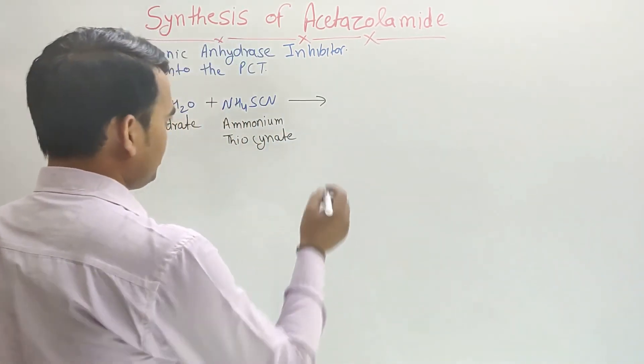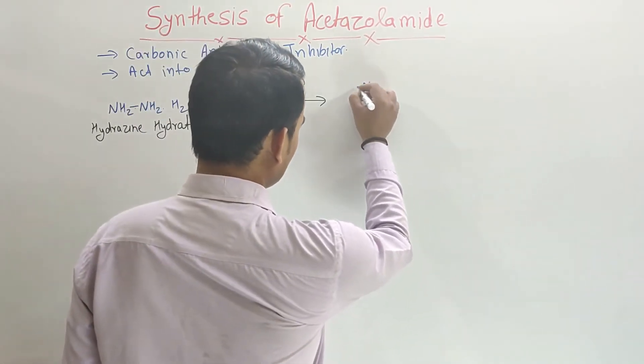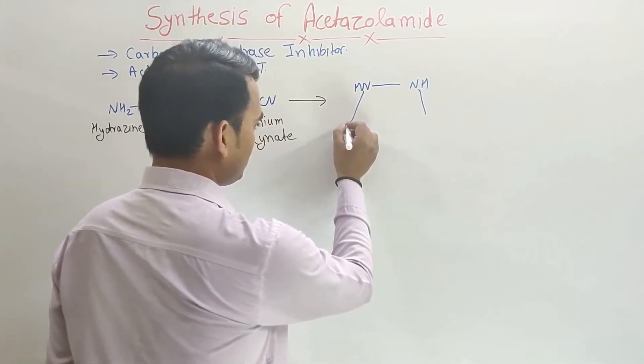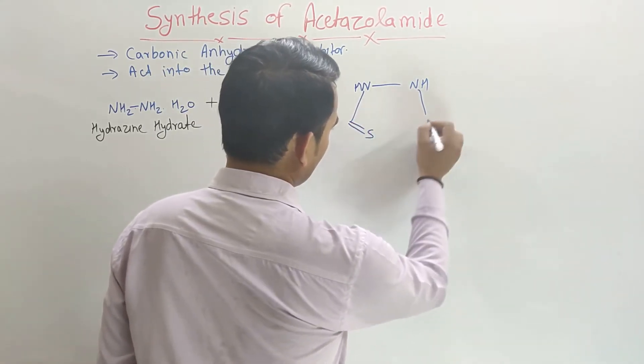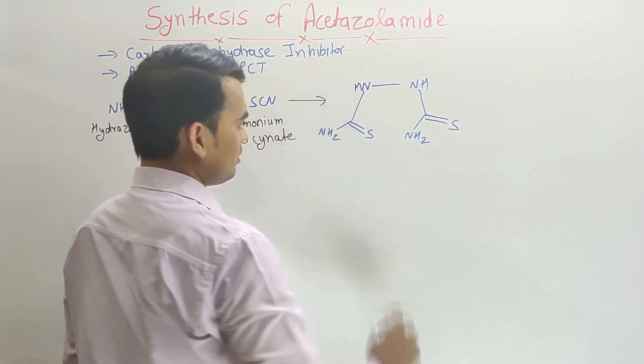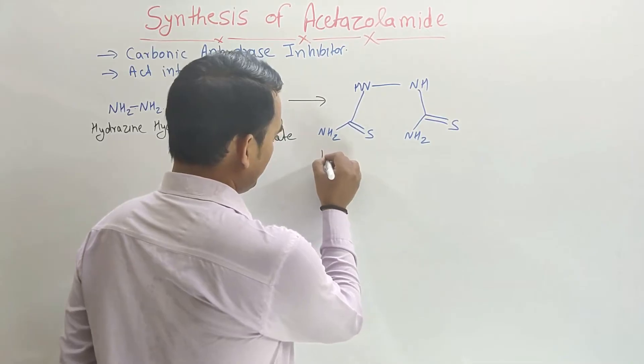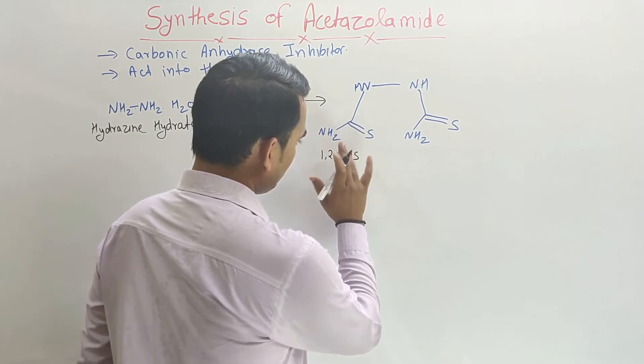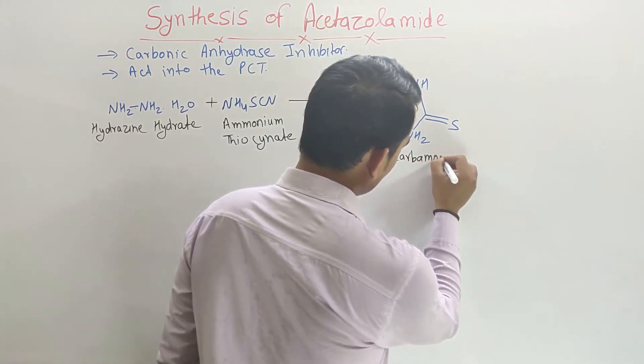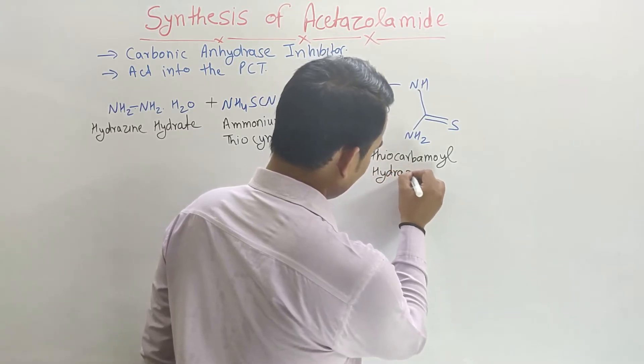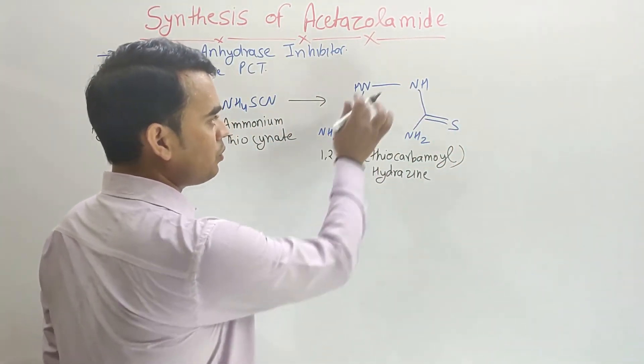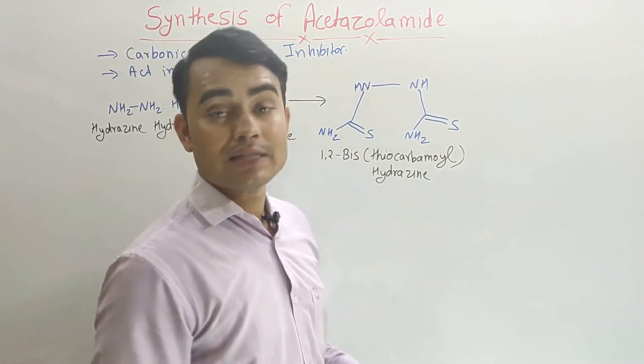When it reacted, then what happened? We have a new intermediate form. This new intermediate is 1,2-bis-thiocarbamoyl hydrazine. It is thiocarbamoyl hydrazine at positions 1 and 2. Both have the thiocarbamoyl, so 1,2-bis-thiocarbamoyl hydrazine.